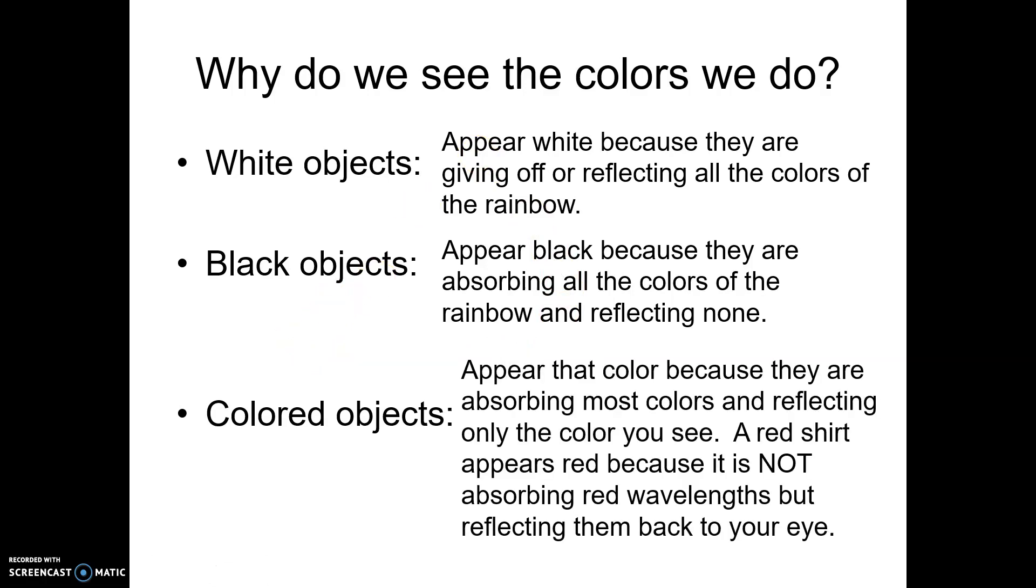A colored object looks colored because it's absorbing most colors and reflecting only the color that you see to your eyes. So a red shirt appears red because it's not absorbing red wavelengths. It's absorbing everything else, but it's reflecting the red wavelengths back to your eyes. So that's how you see color.